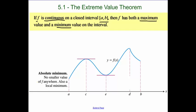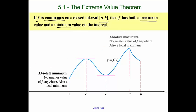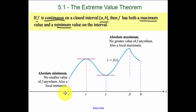This is the absolute minimum — that's the smallest y value. Over here, absolute maximum. In this case, it happened at an endpoint, and then here, also at some point in between.